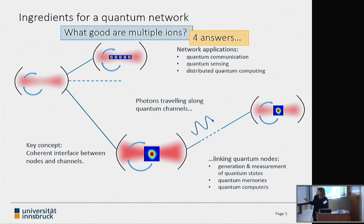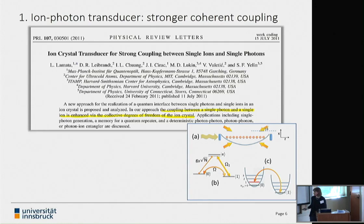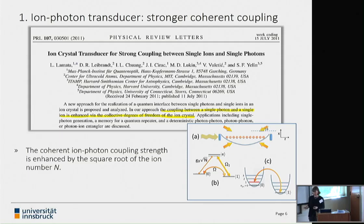I want to give you four answers to this question. The first is a paper that came out of Cambridge, one of the authors from 2011, focusing on this ion crystal transducer. The key phrase from the abstract: the coupling between a single photon and a single ion is enhanced via the collective degrees of freedom of the ion crystal. You have some coherent coupling strength between an ion and a photon, this dipole coupling parametrized by this value G0. Then in this paper, you can enhance that coupling by the square root of the ion number.